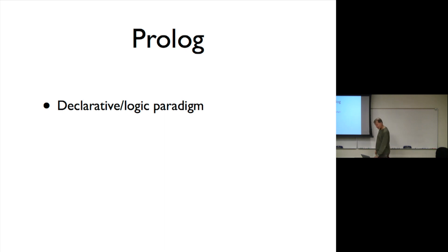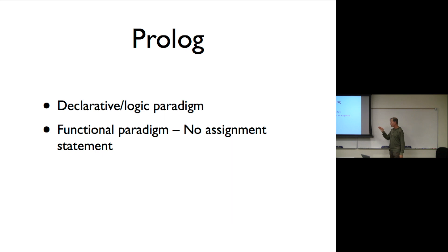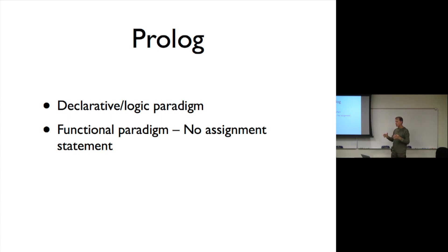Let's take a look at what we had done before in the functional paradigm. One of the main things about the functional paradigm is there was no assignment statement. What were some of the other characteristics? No call by reference - everything was called by value. So whenever you had to return the tree with something inserted in it, you had to make a whole new tree and return a copy.